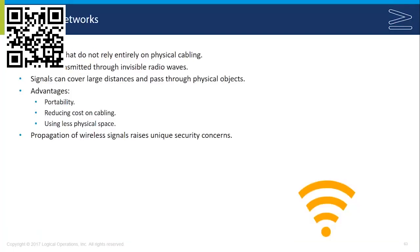We'll start with a definition of wireless networks, because fundamentally these are networks that don't rely entirely on physical cabling. Instead, the data is transmitted through low-frequency radio waves. These signals are able to cover larger distances, and they're able to pass through physical objects like walls in order to reach their destination.